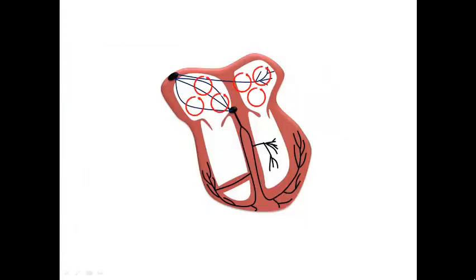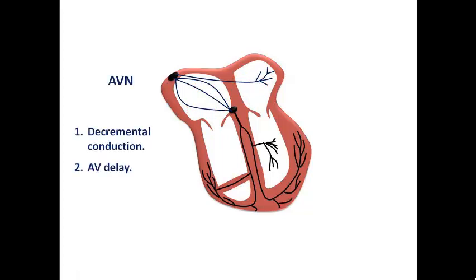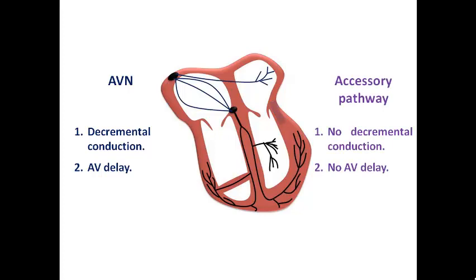What do we mean by pre-excited AF? In this diagram of the heart, we can see the AV node, which is the transition between the atrium and ventricles. It is characterized by two important criteria: decremental conduction and AV delay — a very important protective mechanism for the ventricle, because in case of very rapid atrial rate, not all of it is transmitted to the ventricles. But some patients have an additional accessory pathway — a Kent bundle — which bypasses the AV ring and can transmit impulses from the atrium to the ventricle independently of the AV node.